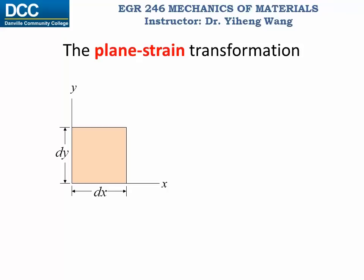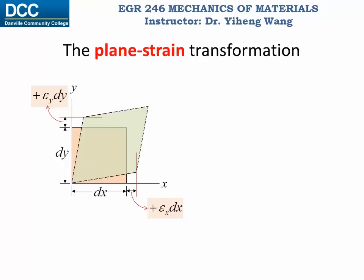For a particle represented by a plane element with original size dx and dy sitting in the xy coordinate system, after deformation its size and shape have changed to a parallelogram shape. According to the definition of normal strain, the elongation along the x-axis is positive normal strain epsilon x times the original length dx, and the elongation along the y-axis is positive normal strain epsilon y times the original length dy. According to the definition of shear strain, if shear strain gamma xy is positive, then the original 90-degree angle becomes an acute angle of half pi minus gamma xy. Therefore, each of these two angles is gamma xy over 2.